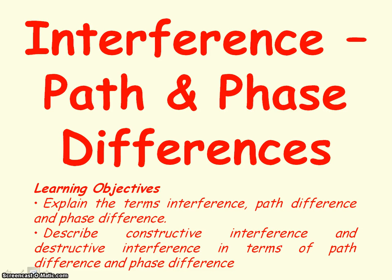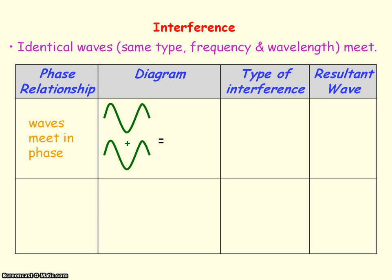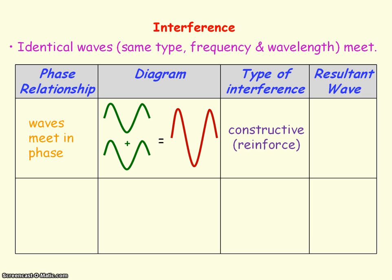We're going to be looking at interference in relation to path and phase differences. Interference occurs when waves of the same type, frequency, and wavelength meet and superpose. There are two special cases of interference. When the waves meet in phase — so they meet in step, their peaks coincide and their troughs coincide — and if we apply the principle of superposition, we get a reinforcement of the waves. This is known as constructive interference because we're getting a maximum resulting wave.